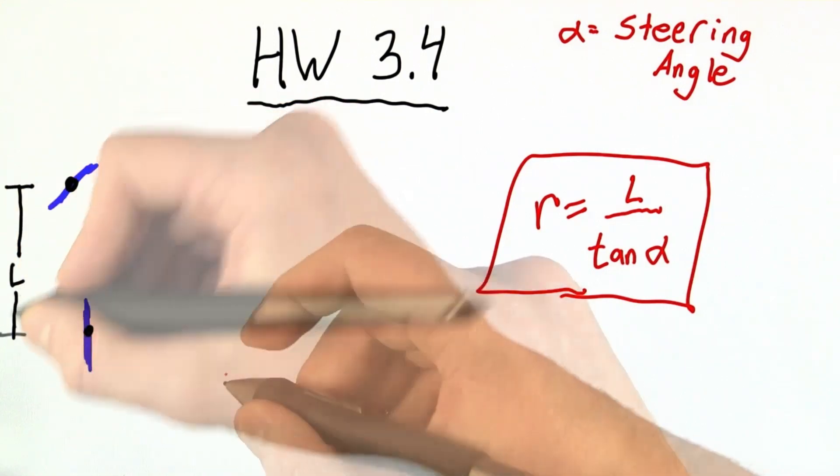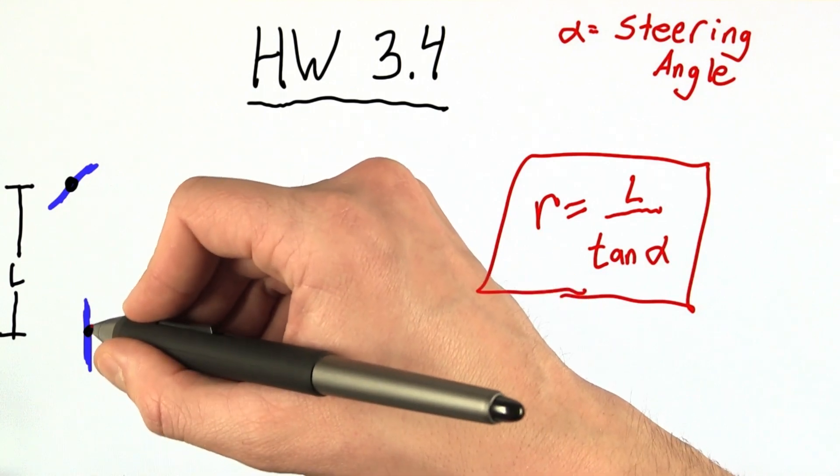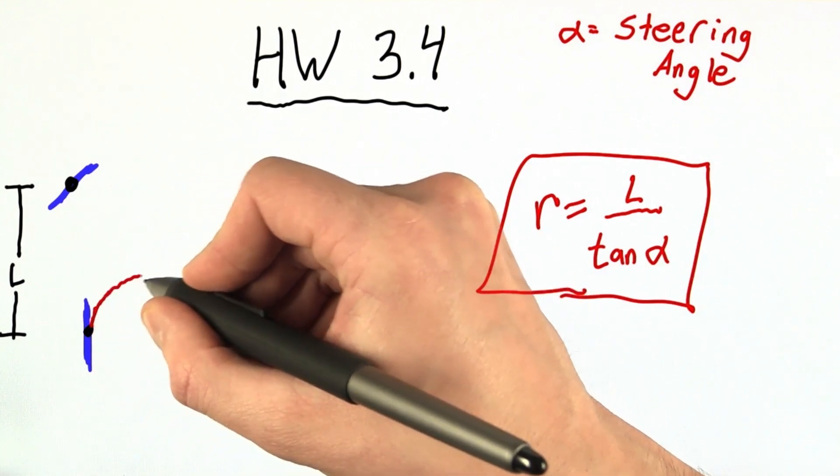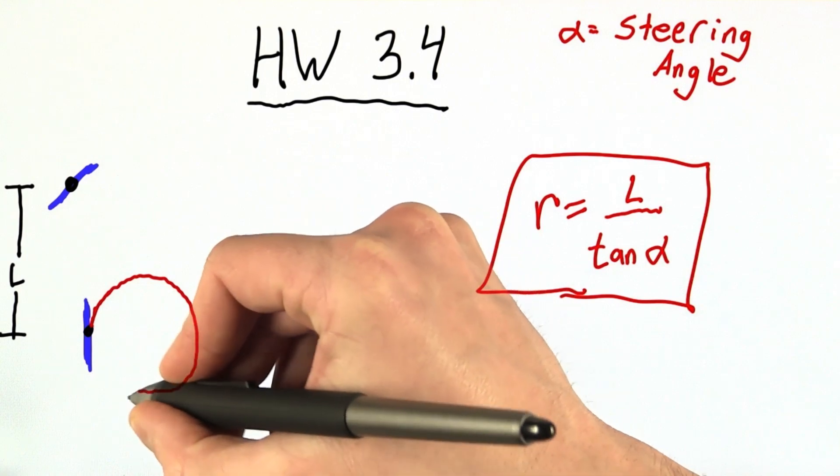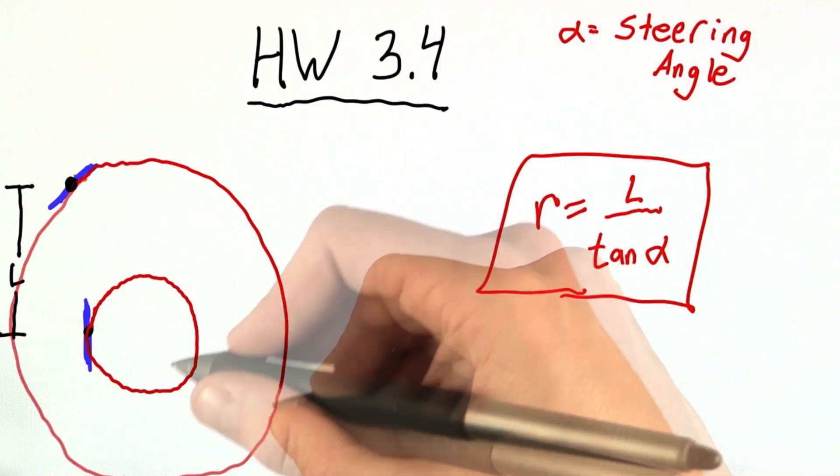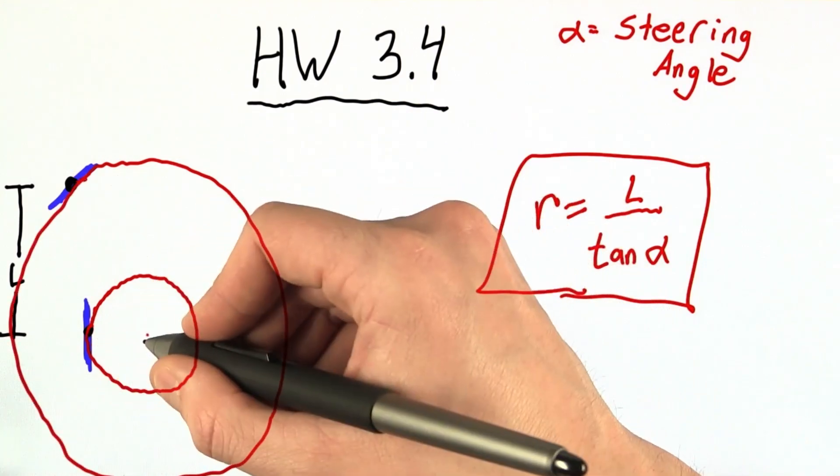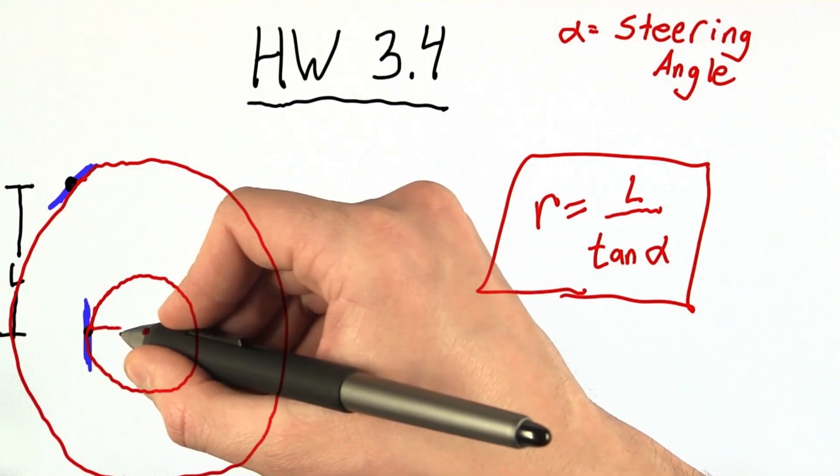And let's draw the circles that these tires travel along. Well, this rear tire is actually going to travel along a smaller inner circle. Well, this tire is going to travel along a larger outer circle. And since we defined our radius of curvature as the distance from the back tire to the center, let's label this R.